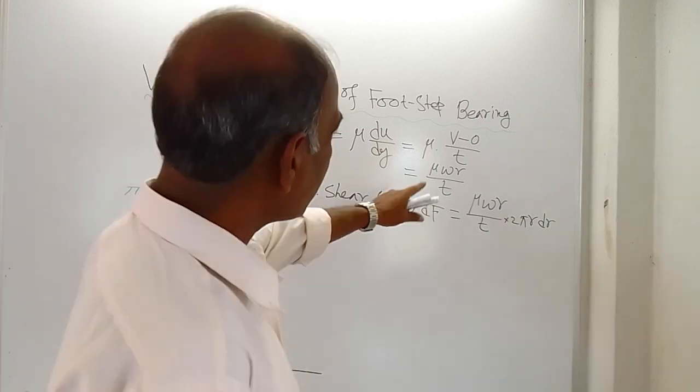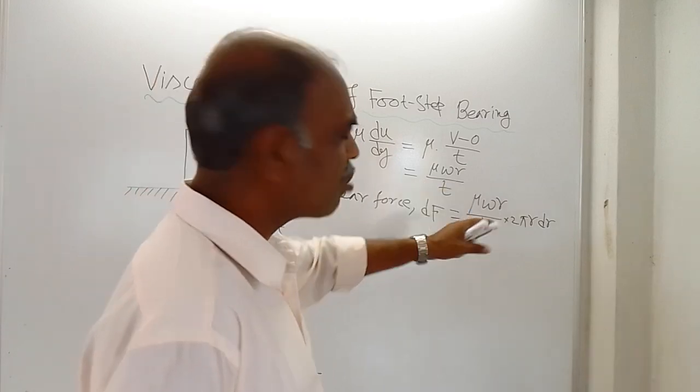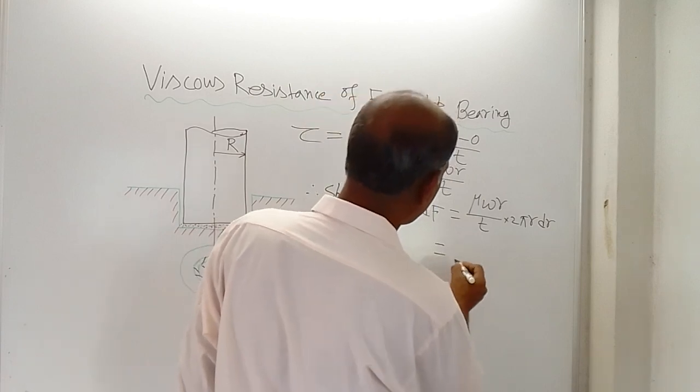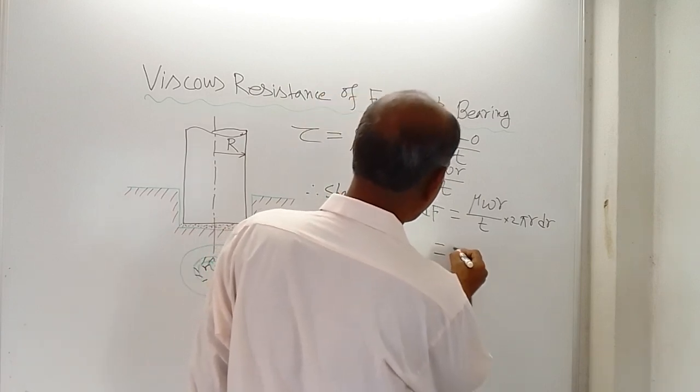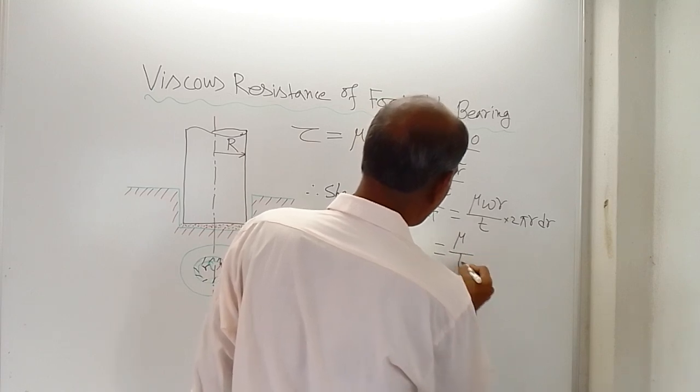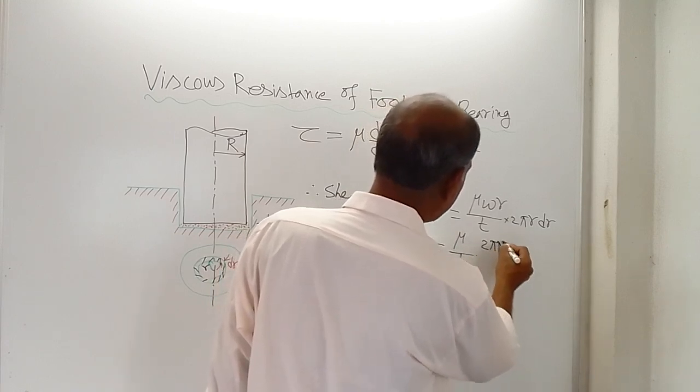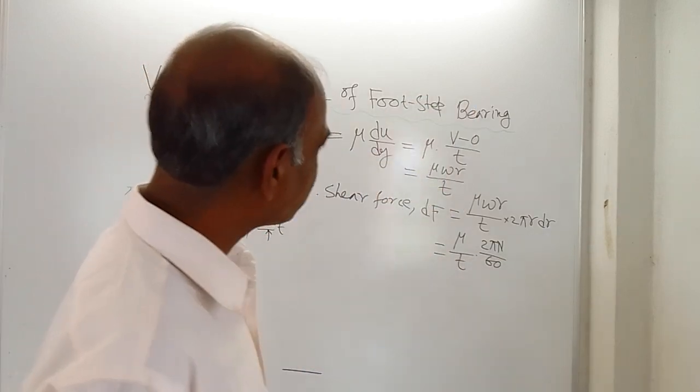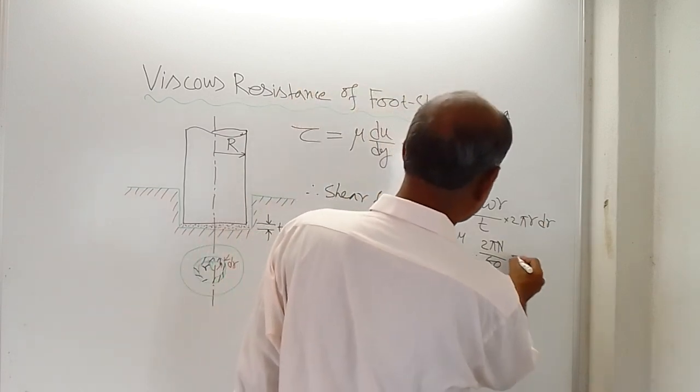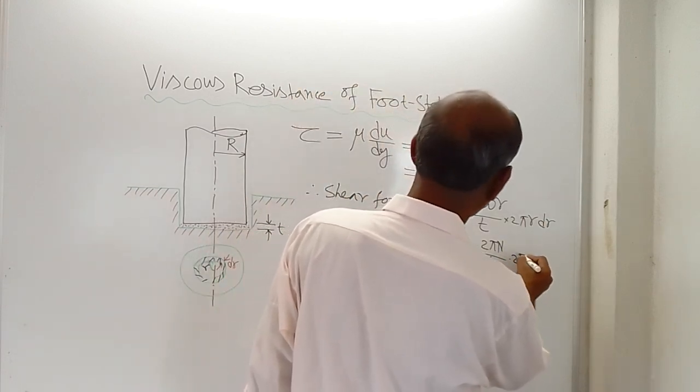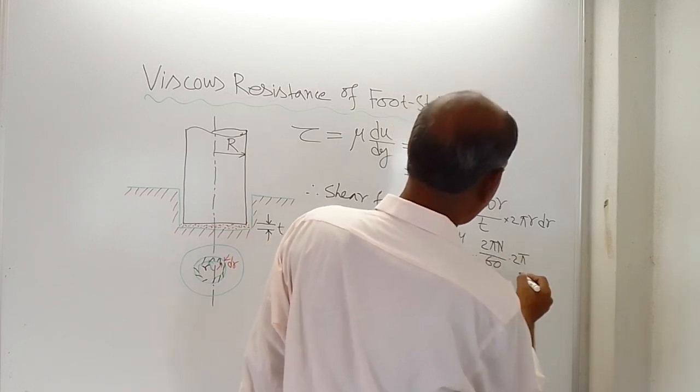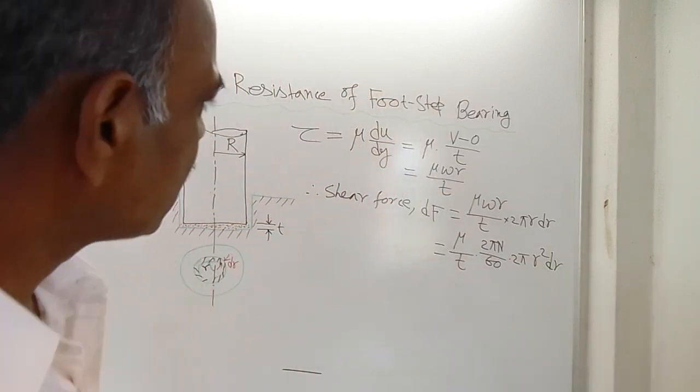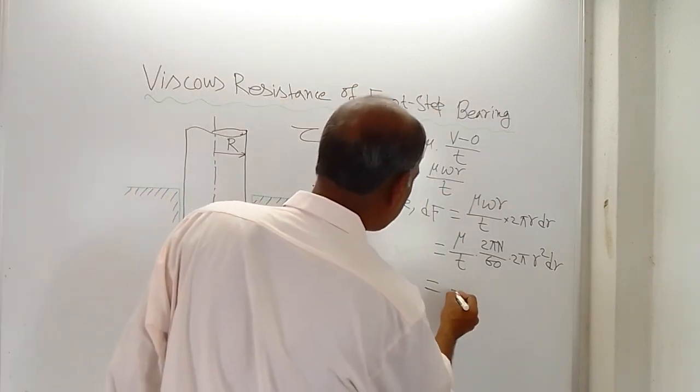And what is omega? Omega is equal to 2π n / 60. So what we are getting here? You write this μ, then this t, then omega 2π n / 60. Omega is replaced by 2π n / 60, and then this 2π is there, and then r square × dr. So what is the result?